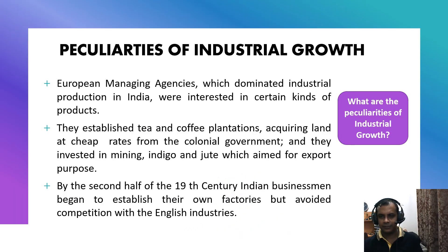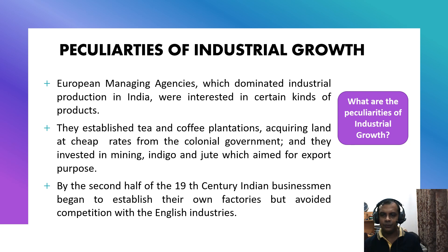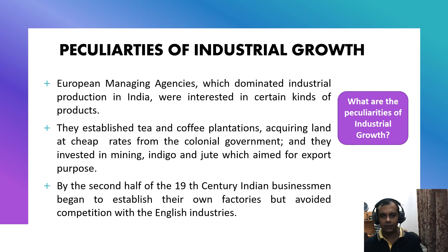What are the peculiarities of industrial growth? That is the first question. European managing agencies which dominated industrial production in India were interested in certain types of products. As you all know, during the industrial revolution India was under the rule of the British Empire. They used all colonies including India for the welfare of their own country, so they were interested in only certain kinds of products. They established tea and coffee plantations acquiring land at cheap rates from the colonial government, and they invested in mining, indigo, and jute which aimed for export purposes.